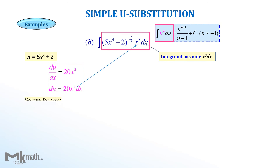Next, we need to compare it with the integrand. Unfortunately, the integrand has only x cubed dx, not 20x cubed dx. To match up with x cubed dx, we divide the differential by 20 to get one-twentieth du equal to x cubed dx, which is exactly the same term in the integrand.